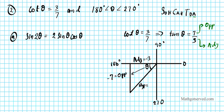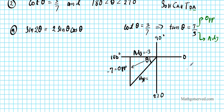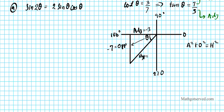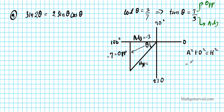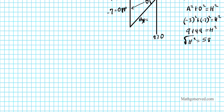The hypotenuse is unknown, so we need to find it using the Pythagorean theorem: a² plus b² equals c². Plugging in negative 3 for a and negative 7 for the opposite: negative 3 squared plus negative 7 squared equals h squared. So 9 plus 49 equals h squared, giving h squared equals 58. Taking the square root of both sides, h equals the square root of 58.